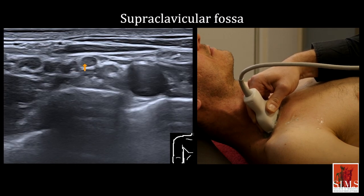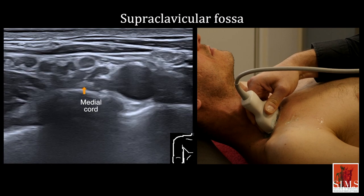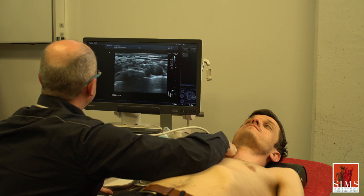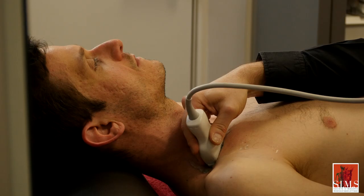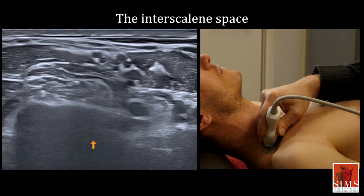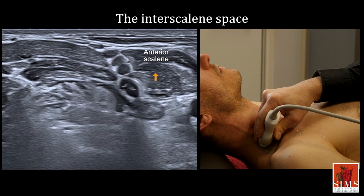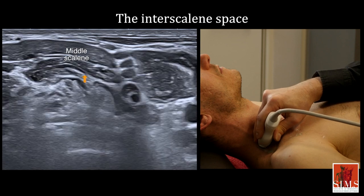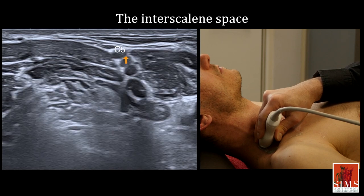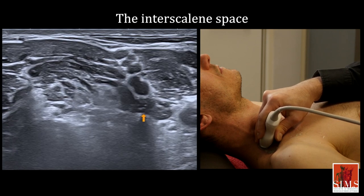The lateral cord is located rather anterior, the posterior cord is rather lateral at this level, and the medial cord is rather posterior. Starting from the reference view on the supraclavicular fossa, and using the ski lift technique, we can follow the nerve structures and quickly reach the interscalene space, consisting of the anterior scalene and the middle scalene. You see that the roots are arranged in this space from superficial to deep. C5 is the most superficial, while C6, C7, C8, and T1 are harder to see deeper down.